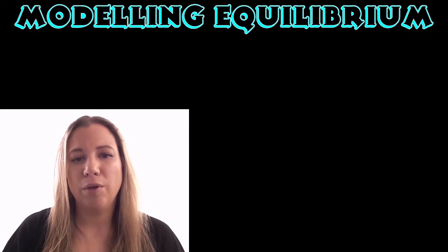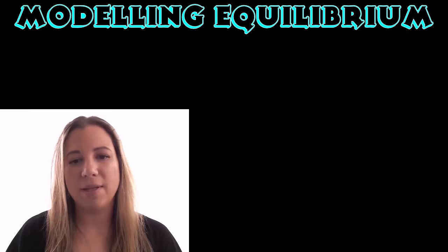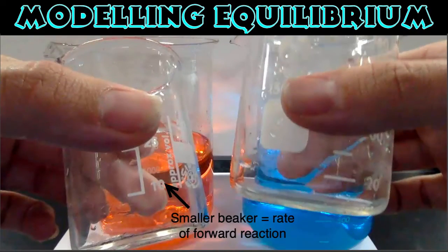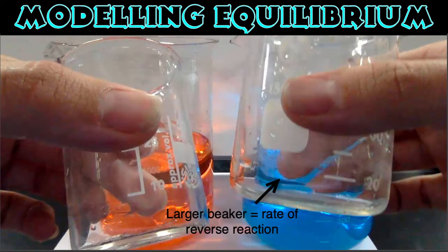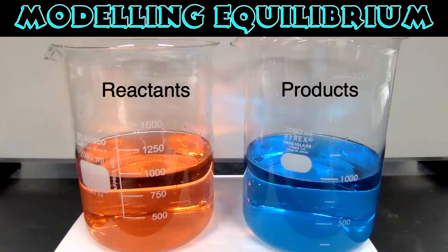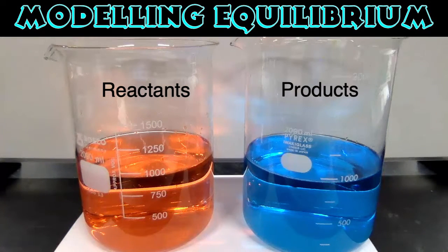What I'm going to do here is model what an equilibrium reaction is and what happens. I've got a small beaker to represent the rate of the forward reaction, and this larger beaker to model the rate of the reverse reaction. The forward reaction shows the reactants, which is the red liquid, forming into the products, which is the blue liquid on the right hand side.